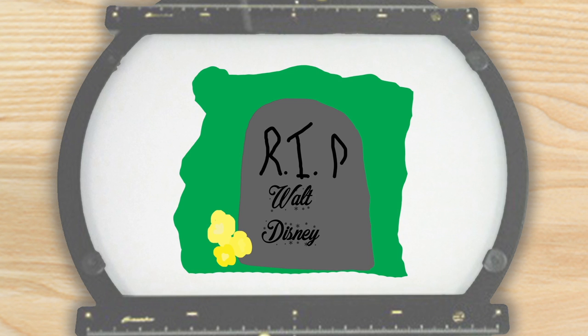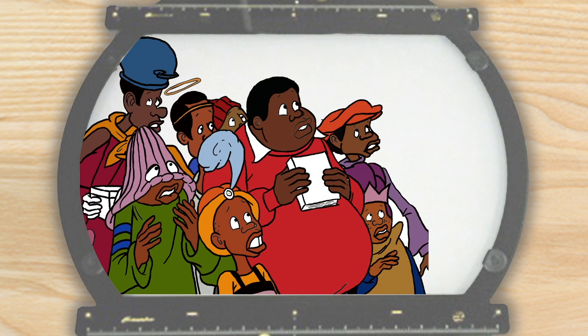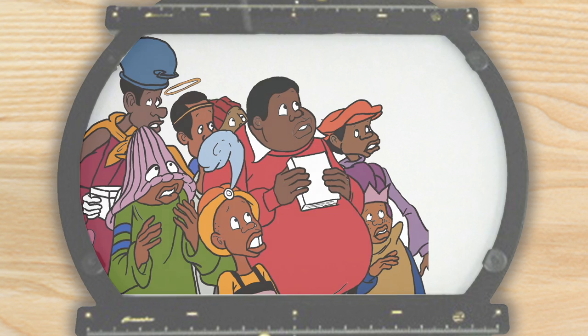After the unfortunate passing of Walt Disney, Floyd left the company for a little bit and worked on cartoons like Fat Albert and the Cosby Kids. In the 70s, Floyd went back to the Disney studio and worked on more movies and later worked with Hanna-Barbera.